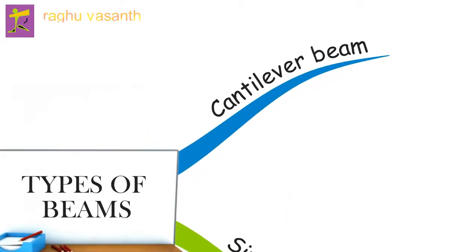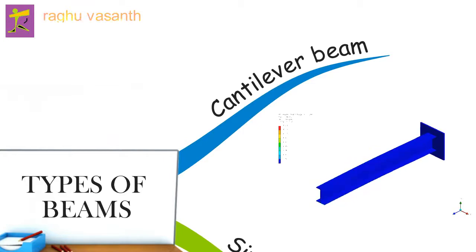A cantilever is a rigid structural element, such as a beam or plate, anchored at only one end to a usually vertical support from which it protrudes. A cantilever beam does not require support on the opposite side, probably the main reason you would use a cantilever beam, and creates a negative bending moment. However, cantilever beams show large deflections and generally result in larger moments.